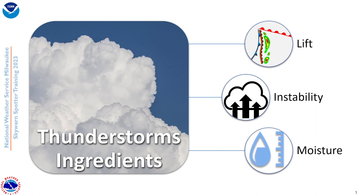Lift typically comes in the form of a cold front, a warm front, or a low pressure system — something that gets motion starting to go upwards when it comes to storms or any precipitation. With high pressure, those are typically sinking motions that help to suppress any kind of precipitation or keep it very close to the ground. So we need something to get those motions going up.